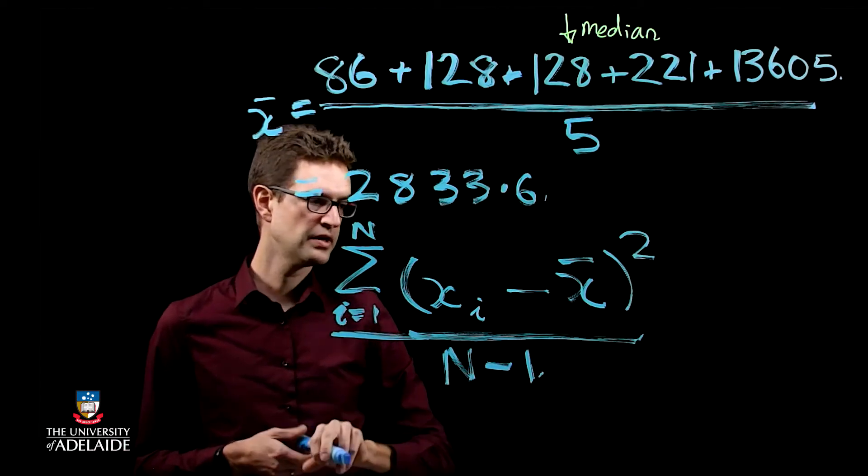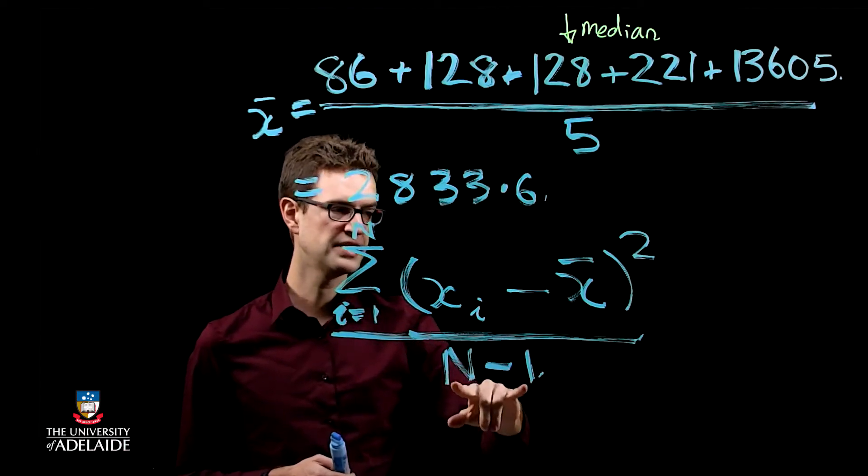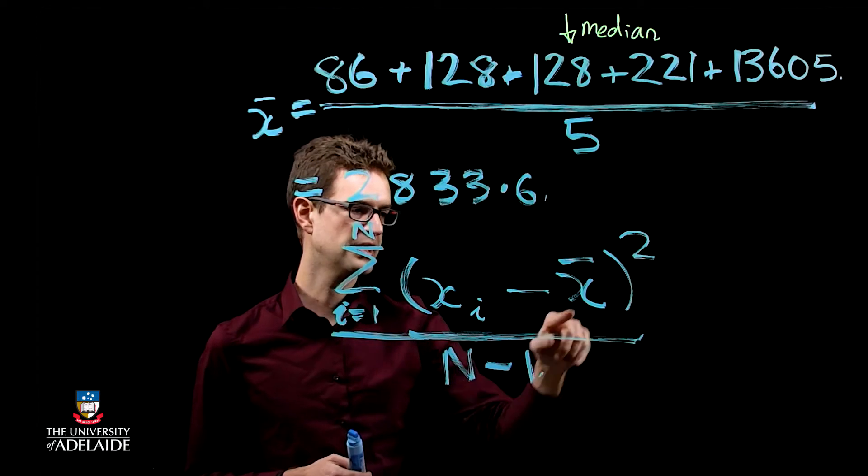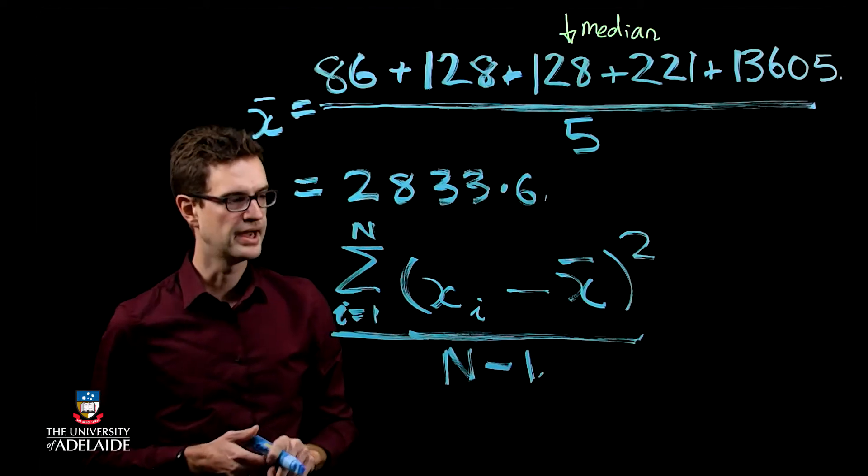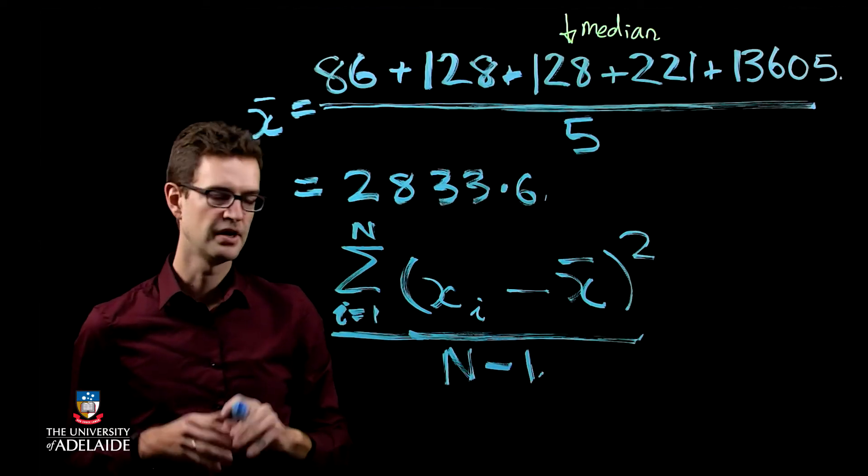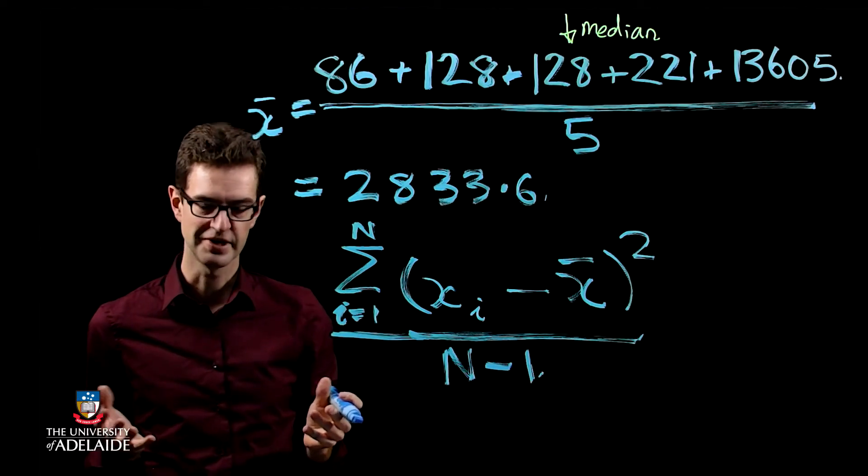So why is this n minus 1? Well, that's actually related to the number of degrees of freedom here, which is n minus 1 because we have the mean, the sample mean, in my estimator here. So that's all I'll say about the number of degrees of freedom.